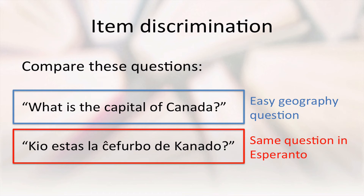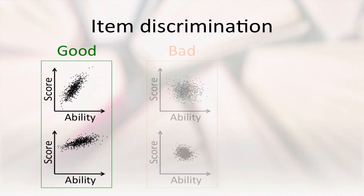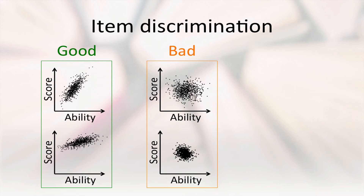So how can we tell whether our students are understanding our questions? Suppose we knew the ability of our students in the subject we're assessing. If we plotted the score each student gets on a single question against their ability in the subject, questions with good item discrimination would produce graphs like these. We're going to ignore the slope and intercept of these graphs, which are related to the item difficulty in the question type, and focus instead on the fact that in both graphs, students with higher ability generally score better on the question. In a science class, we'd say the correlation is good, or that both graphs have a high R-squared. For the question written in Esperanto, the graph might look more like this. Whether or not a student knows Canadian geography has no bearing on their ability to answer the question. The two are not correlated at all.